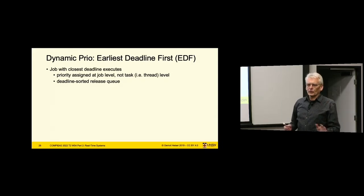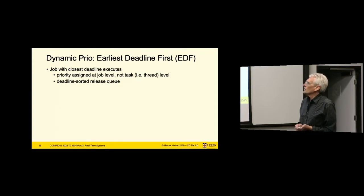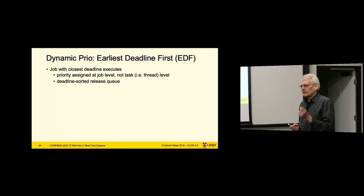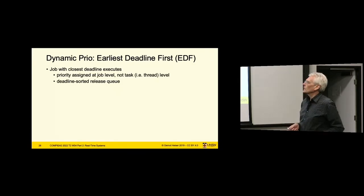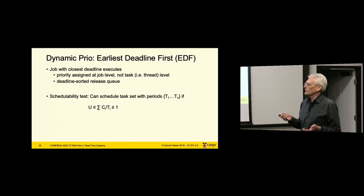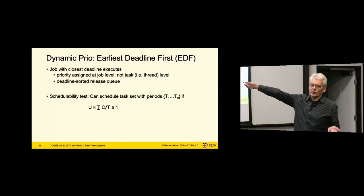That's as much as I want to go into fixed priority scheduling. The next thing is dynamic priorities, and the best of dynamic priorities is Earliest Deadline First (EDF). EDF always executes the job whose deadline is closest, and will preempt to make that happen. Its implementation has a deadline-sorted release queue. The nice thing about EDF is it's actually optimal overall — its utilization bound is 100%. In other words, EDF can schedule anything that actually fits in the CPU capacity.